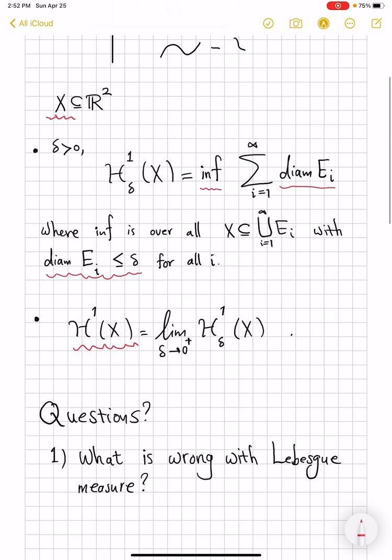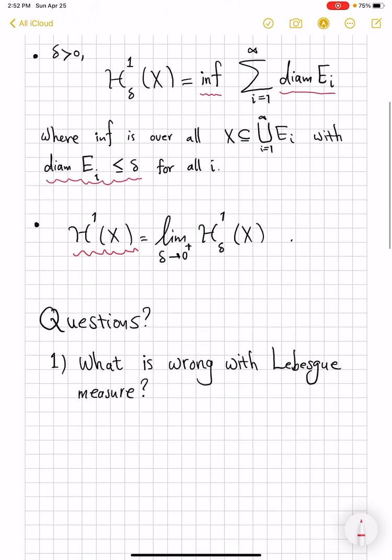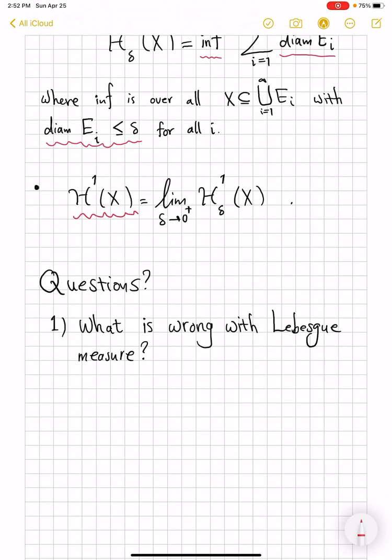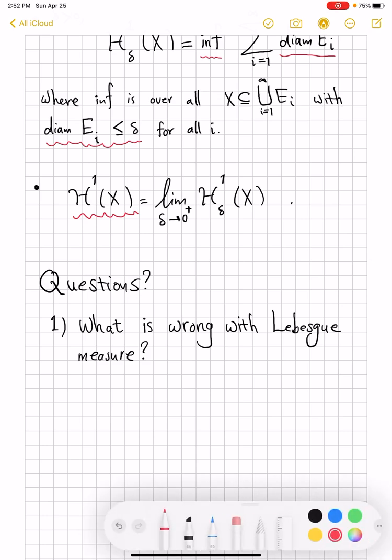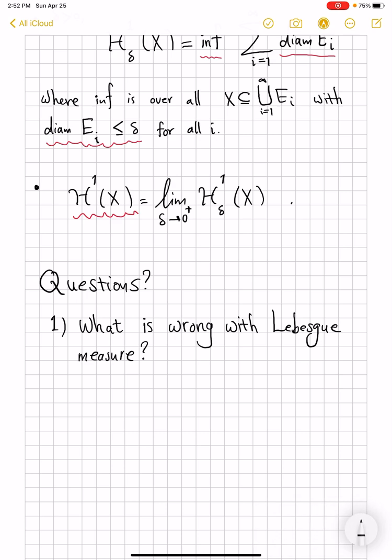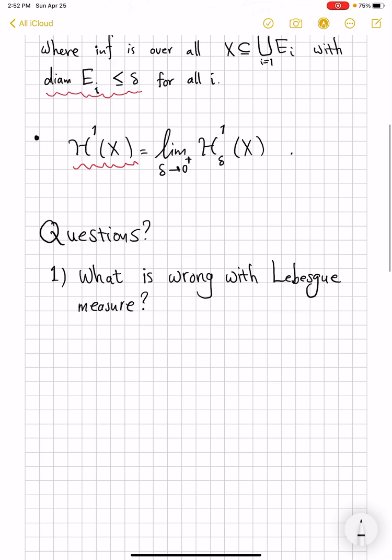There are several natural questions to be asked. For instance, what is wrong with Lebesgue measure? We knew from before that to measure arbitrary-looking sets, we had this notion of Lebesgue measure, which generalizes our notions of length in R¹ and area in R², beyond just rectangles and maybe triangles.